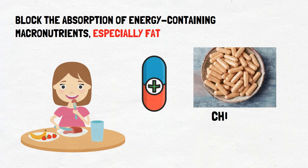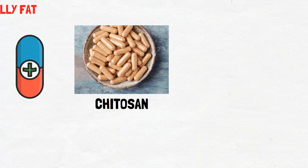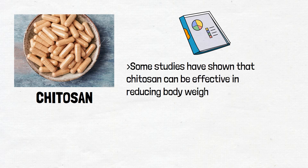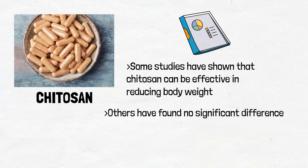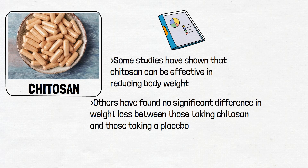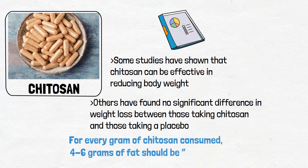One of the most well-known fat blockers is cheetosin. Cheetosin is a fiber derived from the shells of crustaceans, such as shrimp and crab. There have been several studies conducted on the efficacy of cheetosin as a fat blocker, with mixed results. Some studies have shown that cheetosin can be effective in reducing body weight, while others have found no significant difference in weight loss between those taking cheetosin and those taking a placebo. It's estimated that cheetosin may bind up to 4 to 6 times its weight in fat — for every gram of cheetosin consumed, 4 to 6 grams of fat should be blocked. Cheetosin can also block the absorption of bile acids; if this happens, the liver would have to produce its own from cholesterol, thus reducing serum cholesterol in the body.